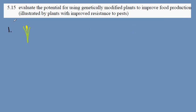IGCSE Biology Syllabus Statement 5.15: Genetically Modified Plants. This is a diagram of maize. Maize is damaged by the larvae of the European cork borer, and this can cause up to 20% loss of crop yield.